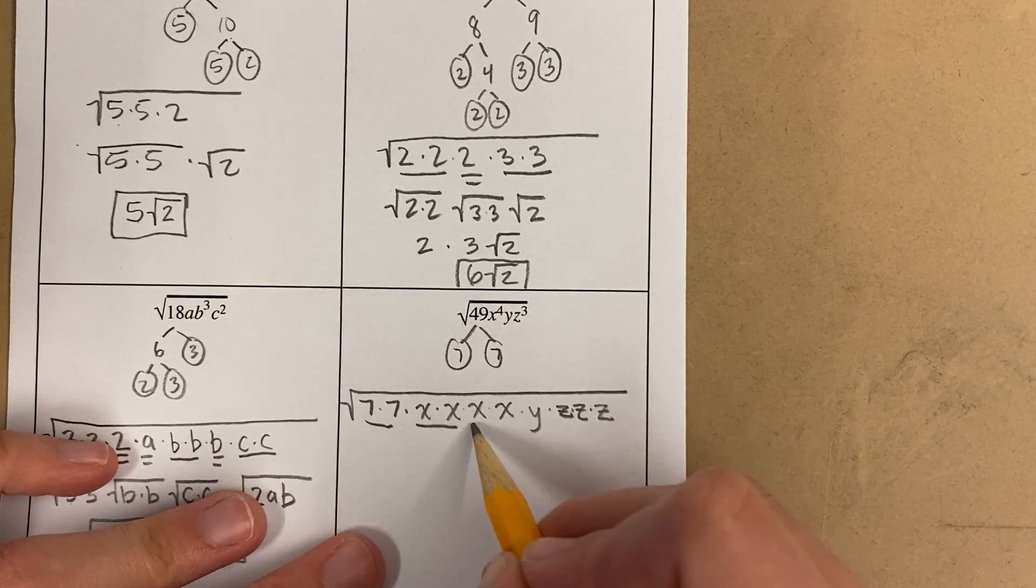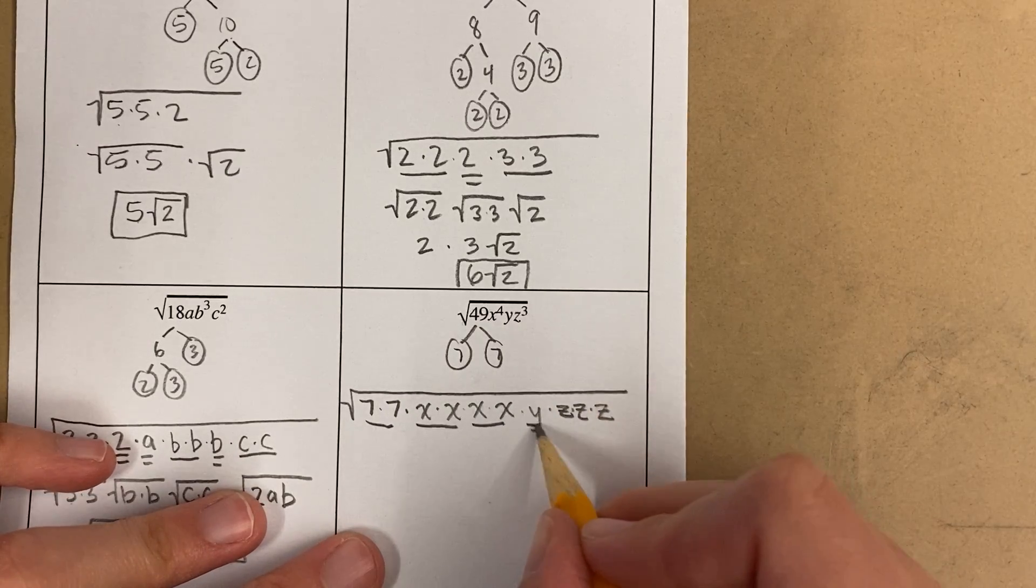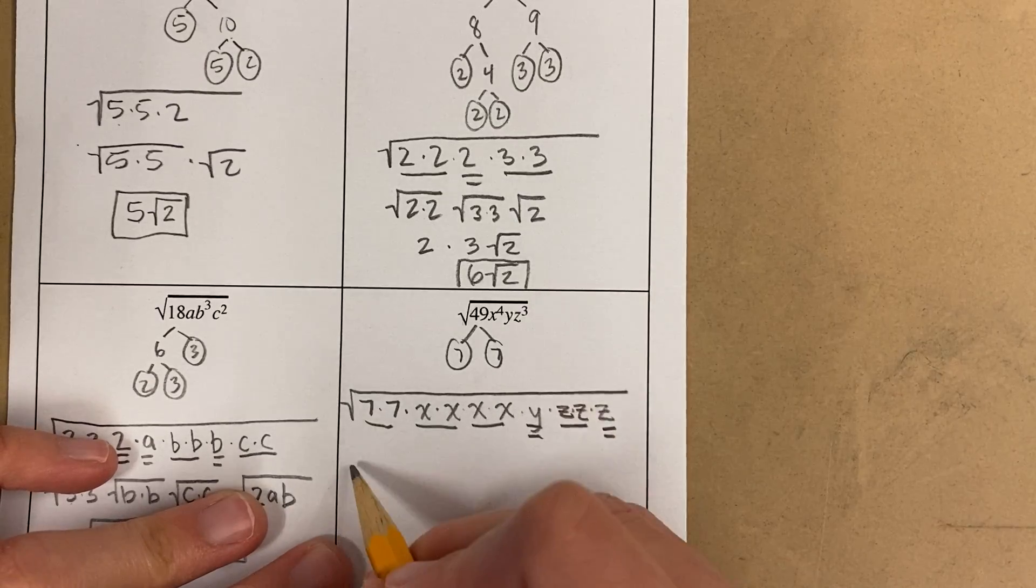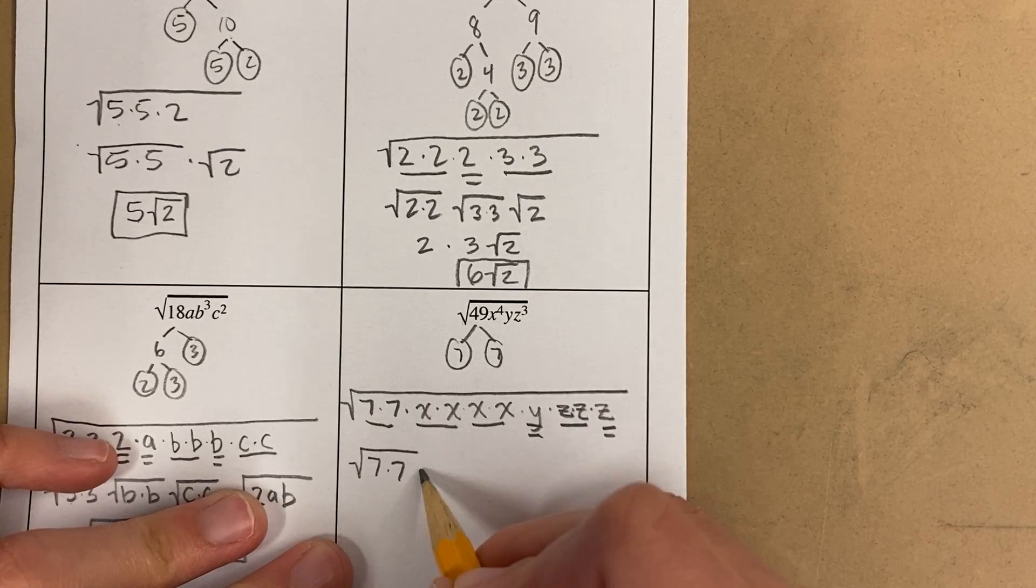Okay, I have a double 7. I have 2 double x's. A single y, a double z, and a single z. So, I'm going to make houses for all my doubles.